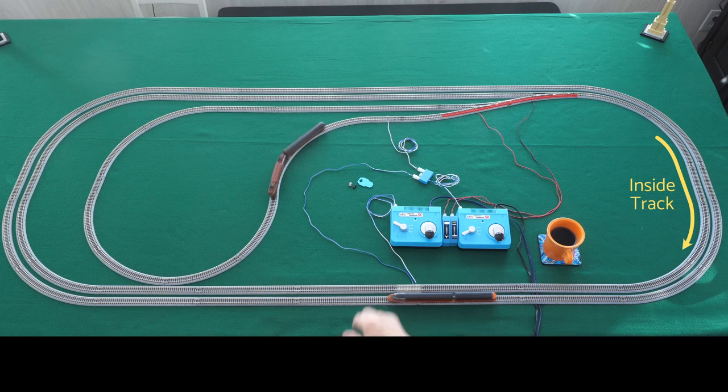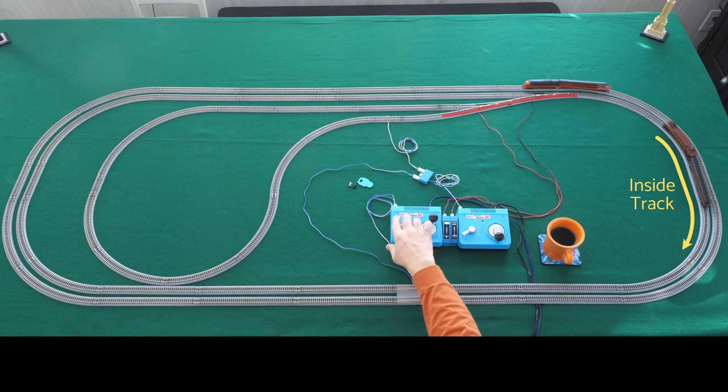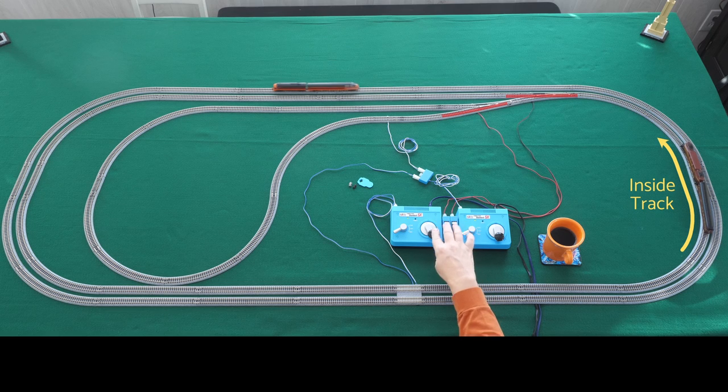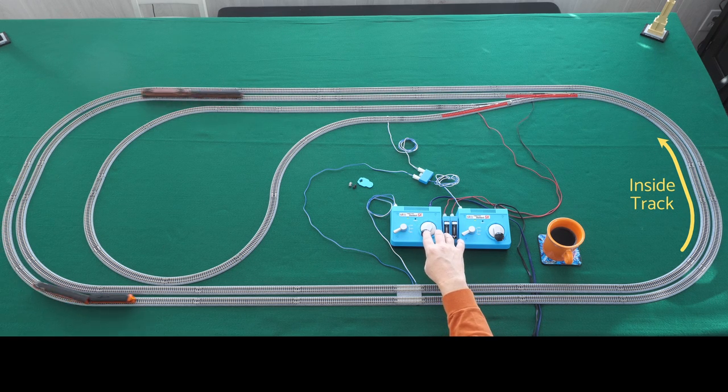Adjust the switches to get out, reverse the polarity, and you're good to go. Always adjust the inside lane's direction while the train's in the loop. That way you won't short out anything.